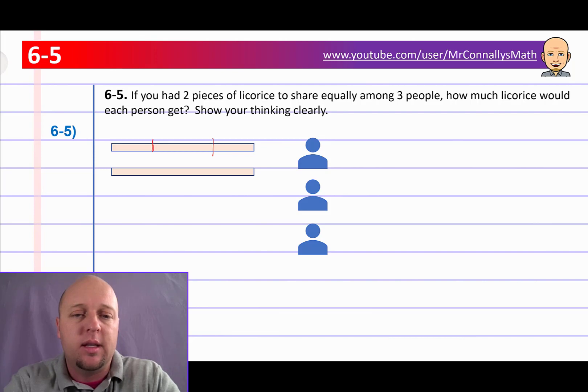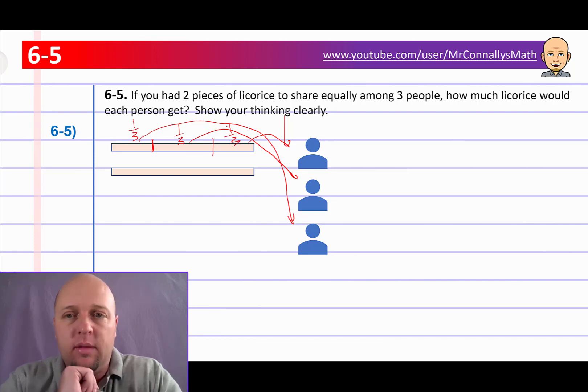So three equal pieces, we'll cut about there and there. It's a little off, but you get the idea. Okay, so then each person gets a piece. So you get this piece right here, you get this piece right there, and you get this piece right there. Each of them gets exactly one-third of the licorice. Ah, but there's another piece. We can always just cut it again.